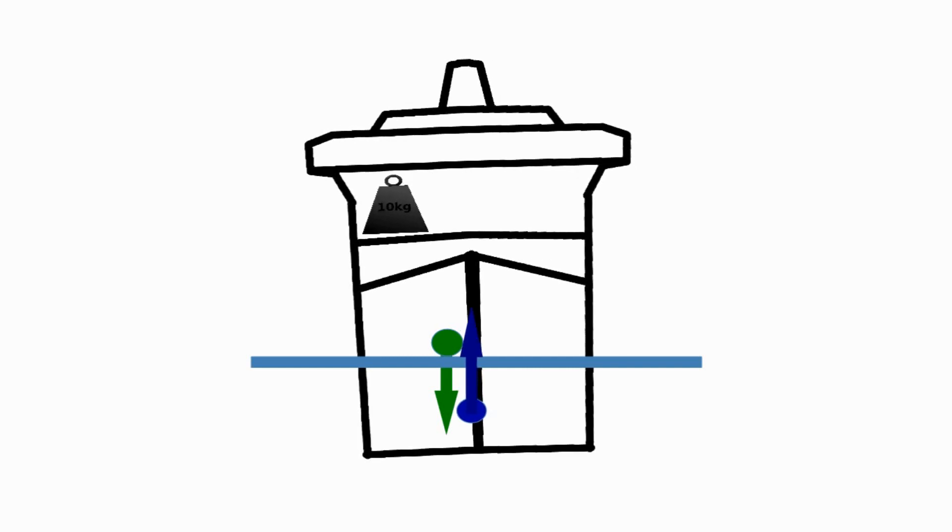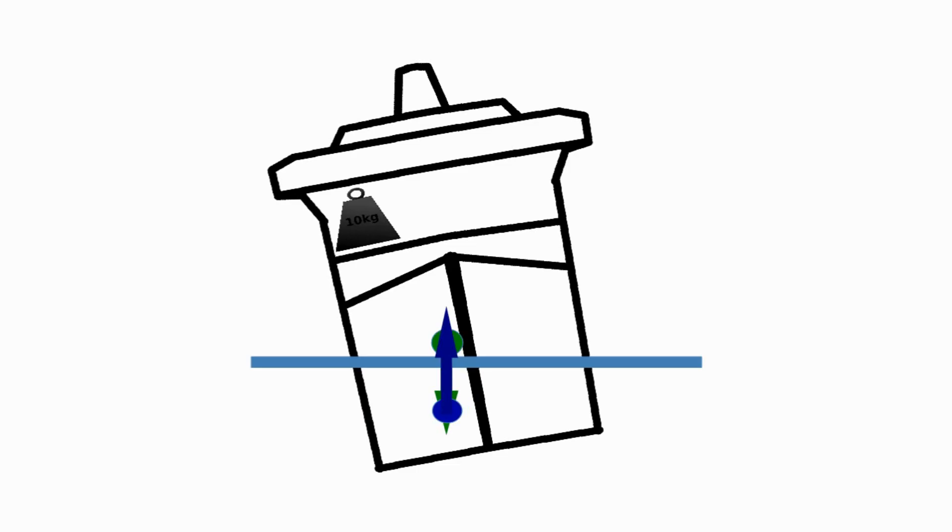If we let those forces act now we can see that the ship is going to lean over until the forces are in line again, until that centre of buoyancy is directly below the centre of gravity. Again the centre of buoyancy has moved because the underwater area, the shape of that has changed and it's moved along far enough that the forces are now in balance again and the ship is happily sat there, albeit slightly lopsided.